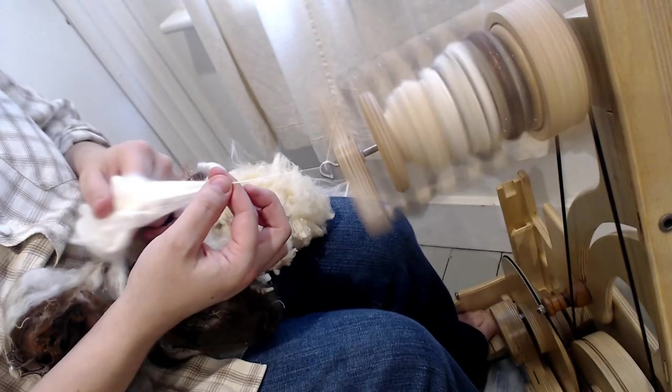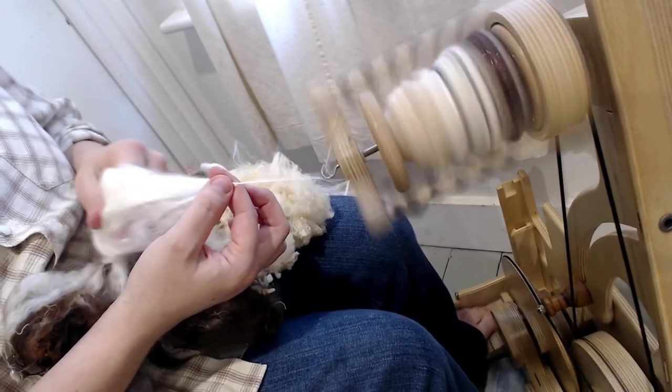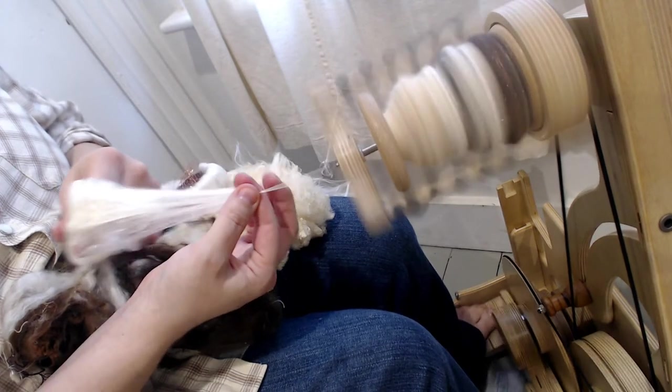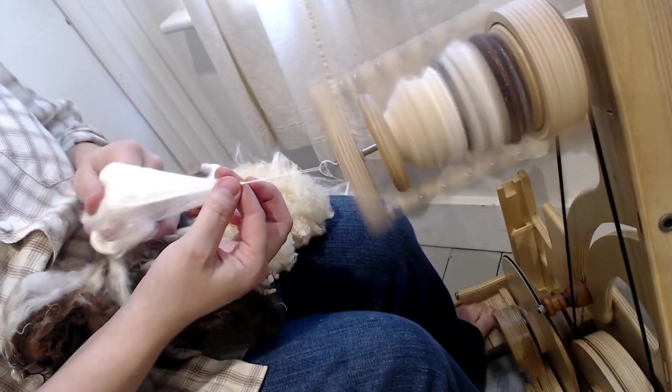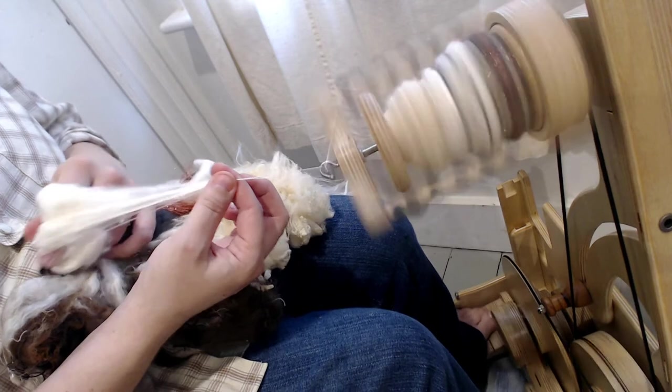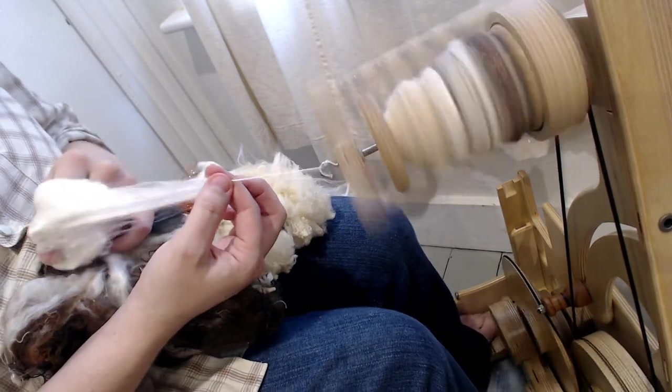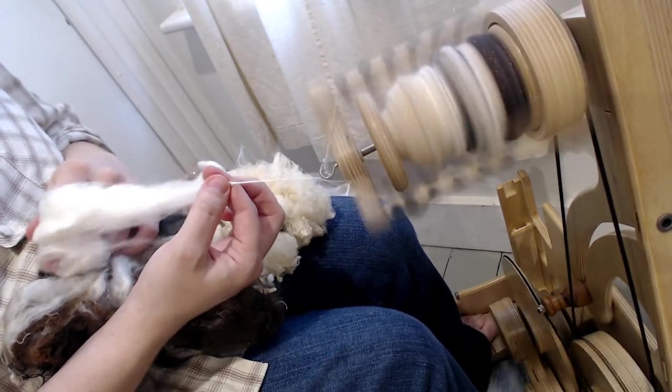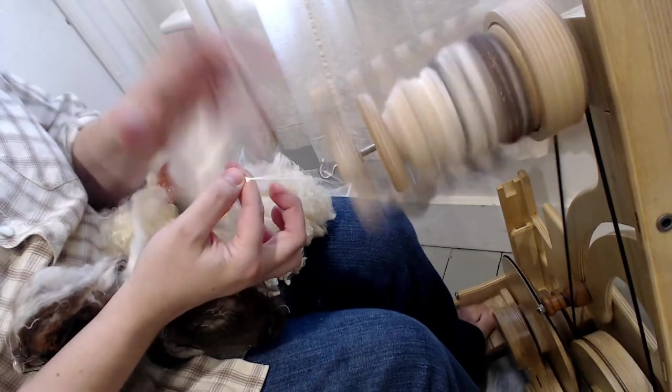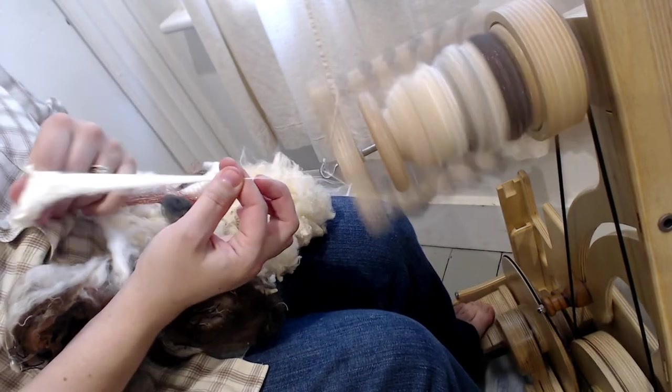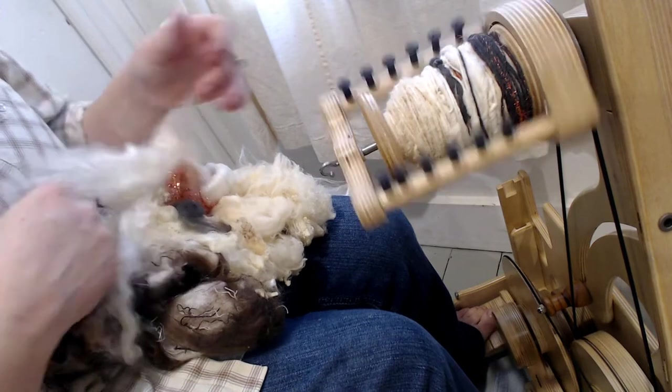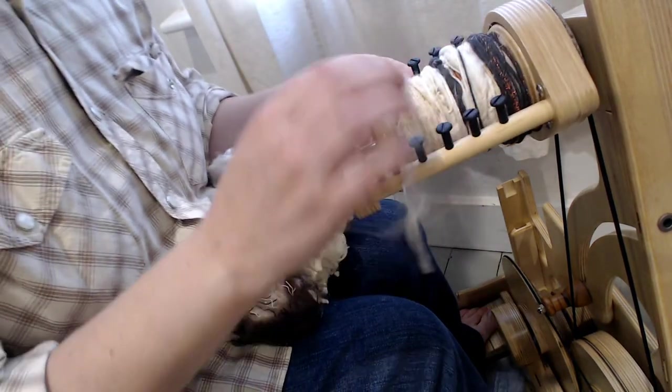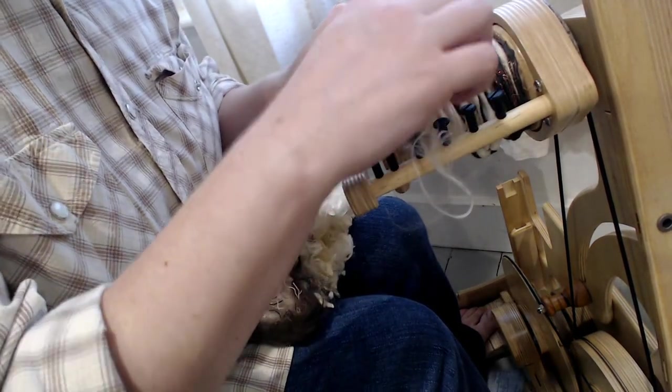And short backward is nice for silk. See how I'm keeping this hand still and just pulling the fibers back. A little bit too thin. Now we get to play the game of find the end.